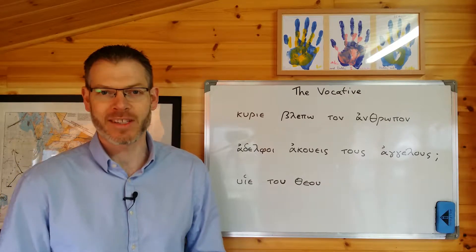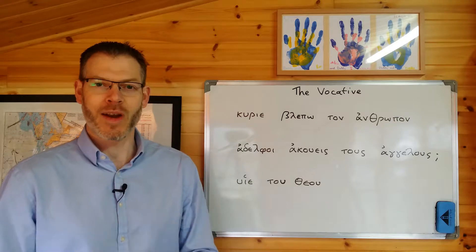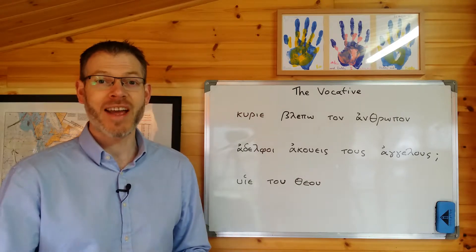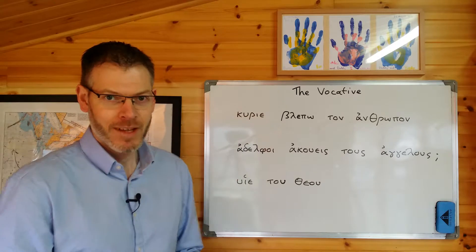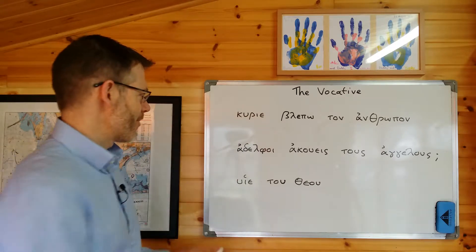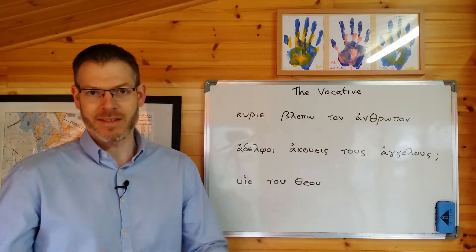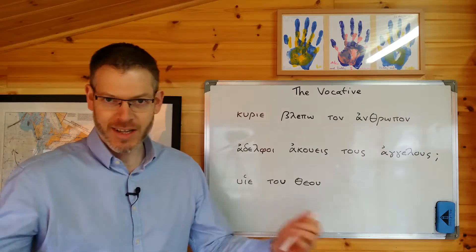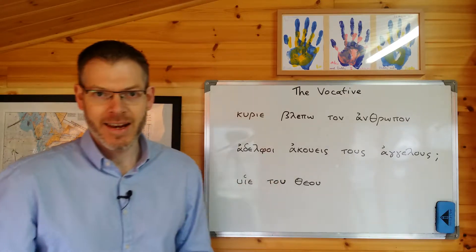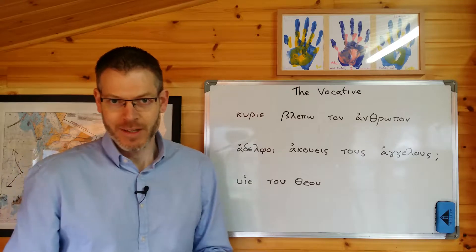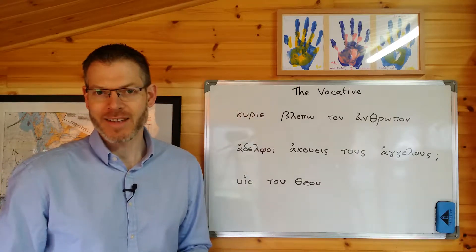So what is the vocative? The vocative is a fifth case in Greek, which is used whenever you want to address somebody. For example, if I wanted to say 'Lord,' I would say 'Kyrie' in the vocative. If I wanted to say 'Brothers,' addressing a group of people, I would say 'Adelphoi' in the vocative. So it's a fifth case — sometimes just called the case of address.